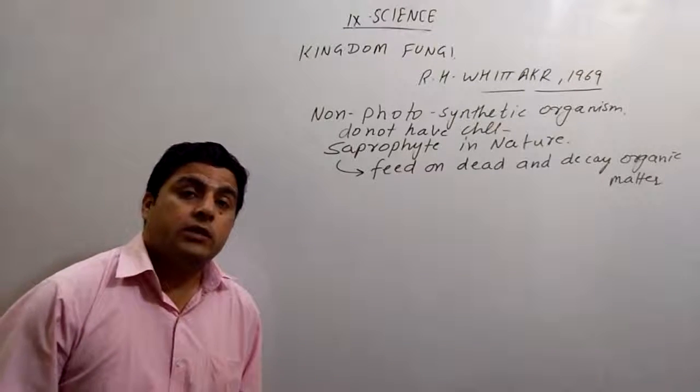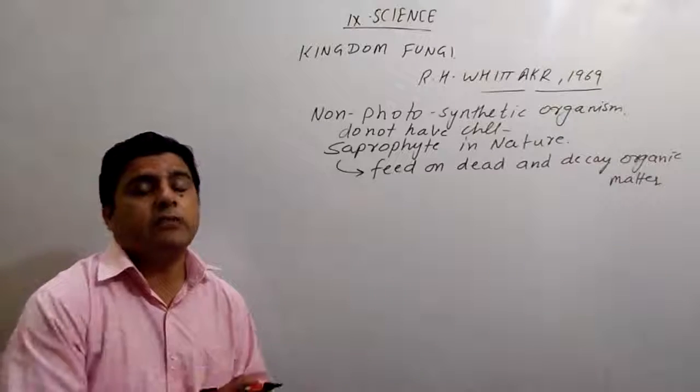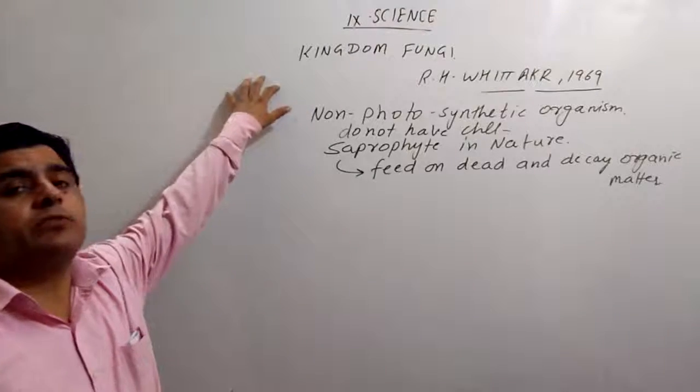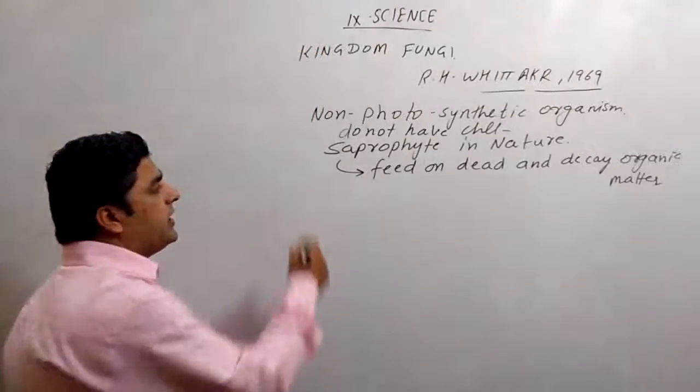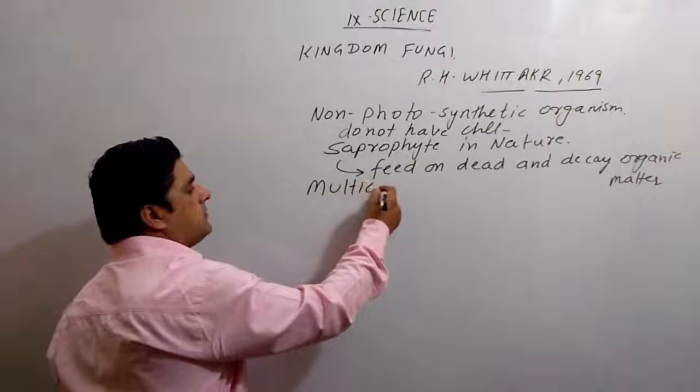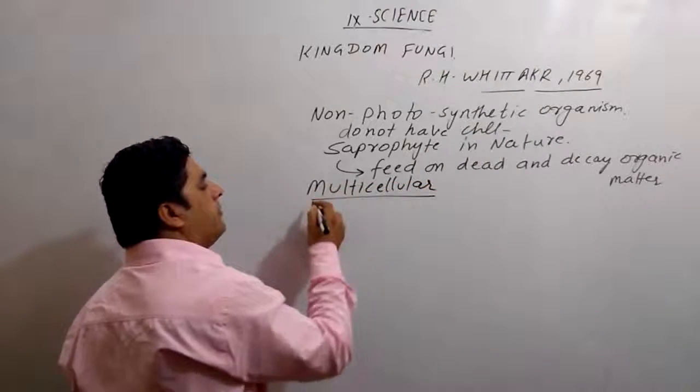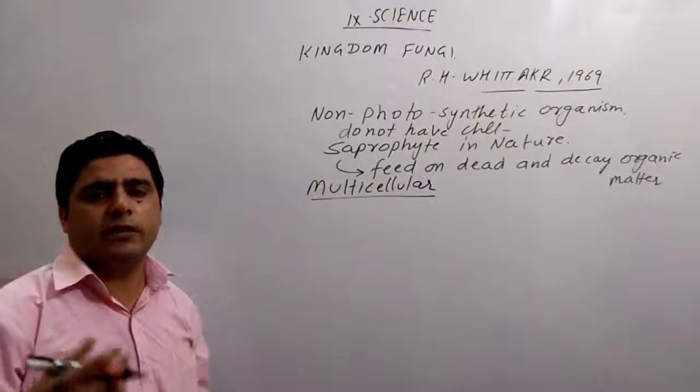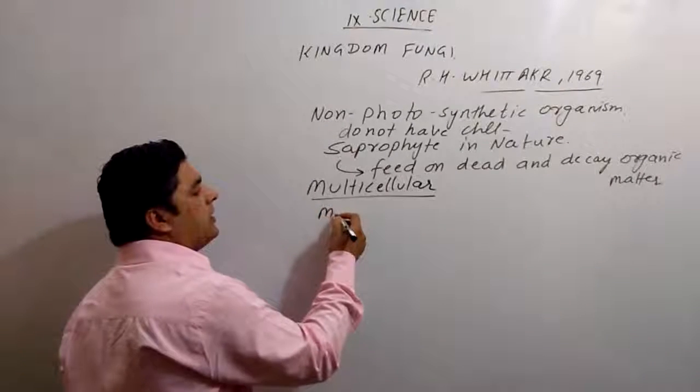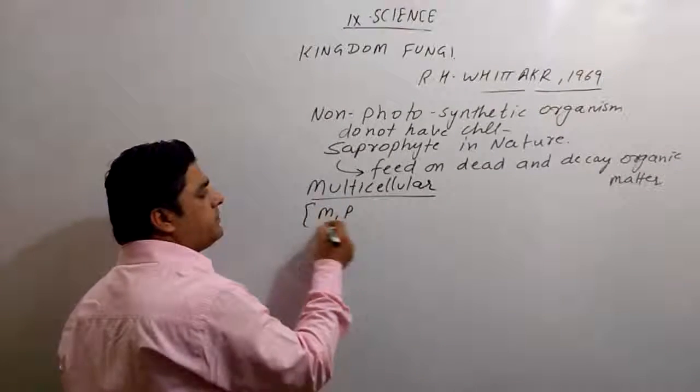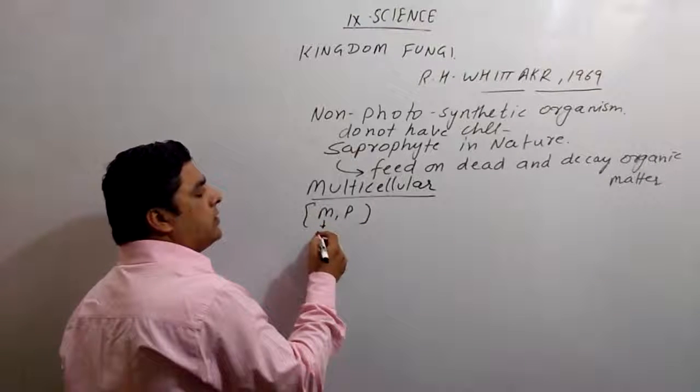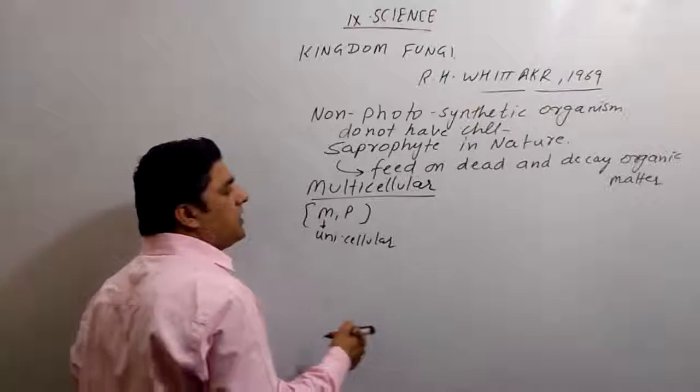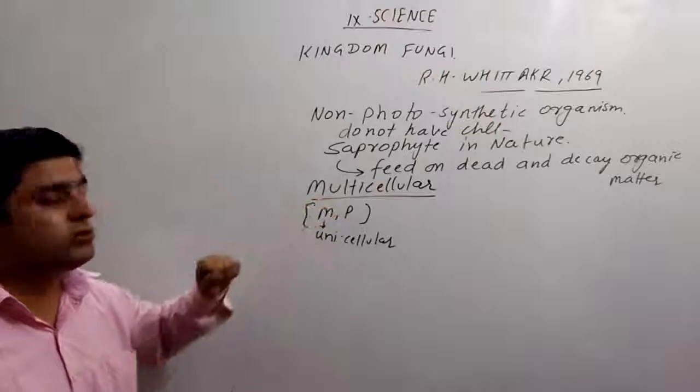Now dear friends, why we made the fungi as a separate kingdom? Because it does not match with the other organisms. So, they are multicellular. And what we have studied about the Monera and Protista, they are unicellular. And it is multicellular. So, we cannot put the fungi in these two kingdoms.